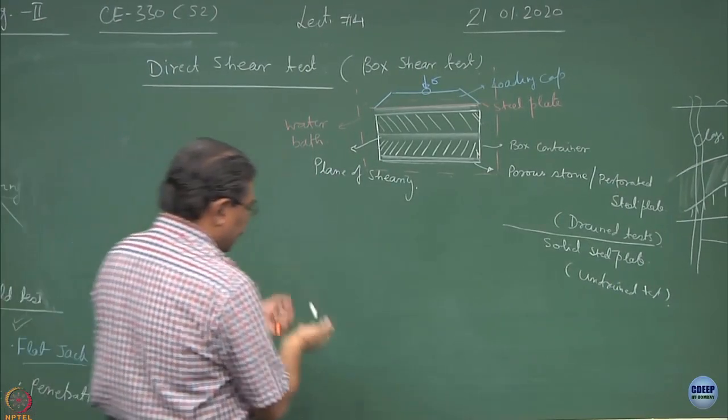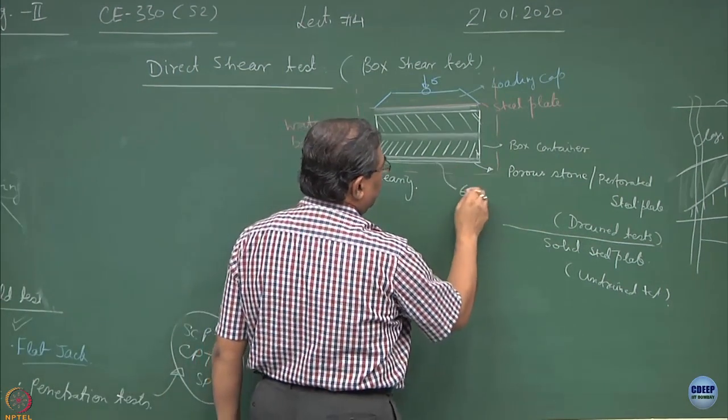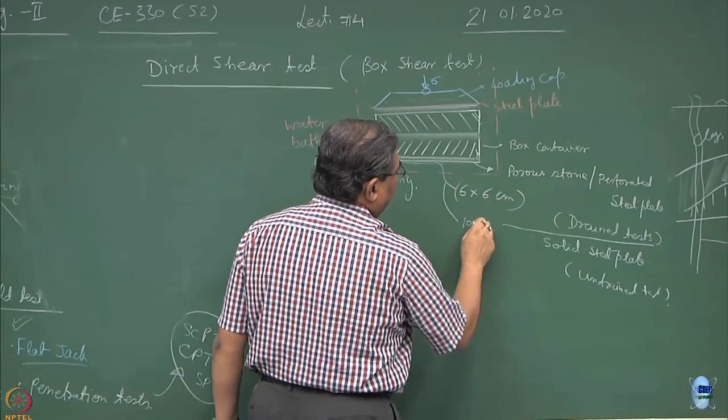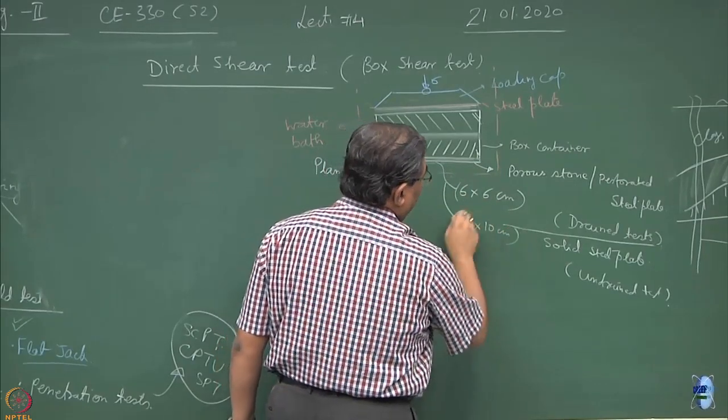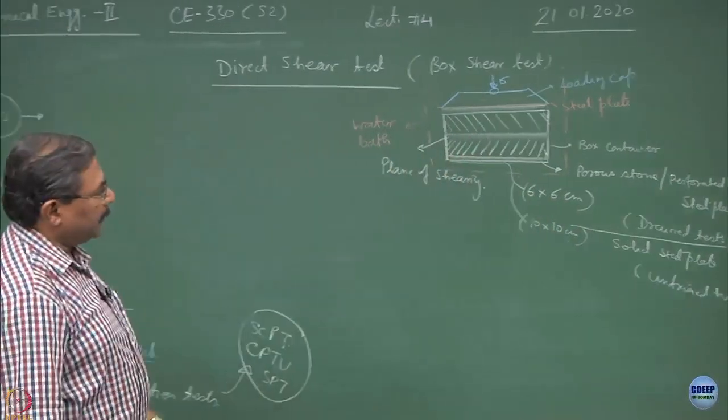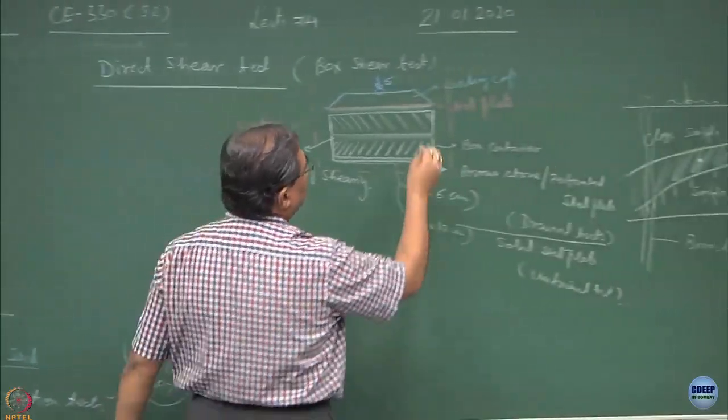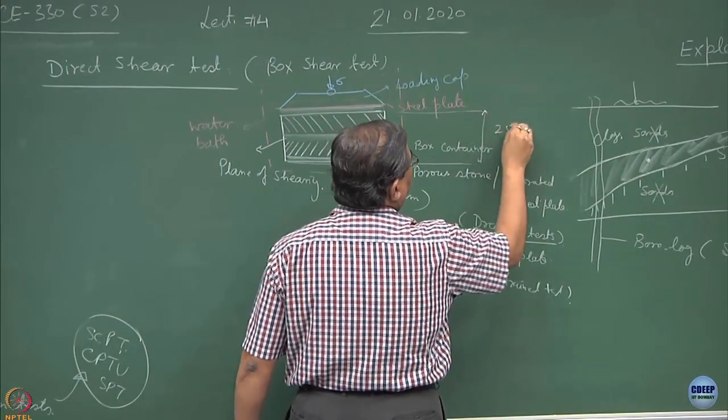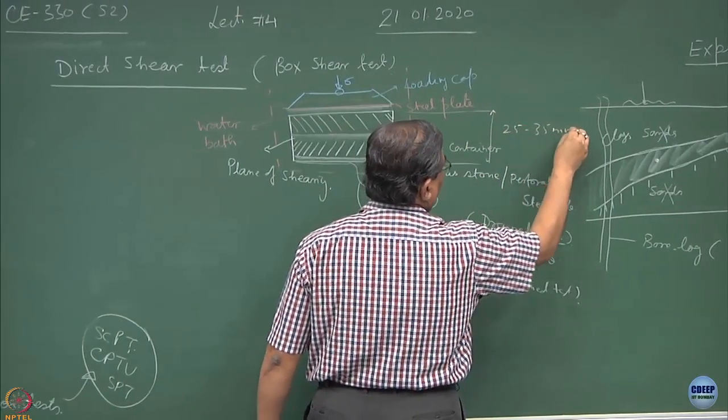As I said, the typical dimensions are 6 by 6 centimeters or 10 by 10 centimeter. So the size of the sample is going to be 10 by 10 or 6 by 6 and usually the thickness is approximately 25 to 35 mm depending upon your requirements.